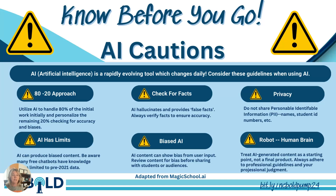You always need to make sure that you're protecting privacy — no PII, where you're identifying student ID numbers, names, or addresses. None of that; all of that is taboo. Know that AI has limits — a lot of the free chatbots have pre-2021 data, so it can be dated information. Also recognize that AI is biased. Input has been done by users, and users inherently are biased, so make sure that you review that content and check for that.